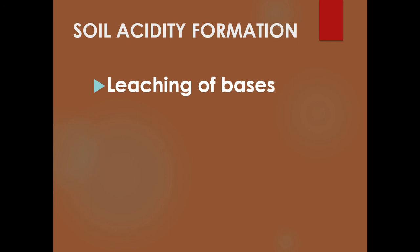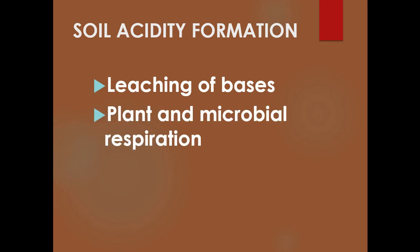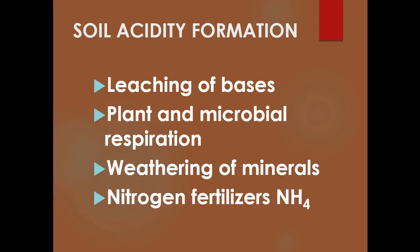How does acidity form in the soil? From the leaching of bases — if our soil has a low cation exchange capacity and higher rainfall, we can lose bases from soil formation. Plant and microbial respiration also play a role, as plants can take up bases or release hydrogen ions when taking in other elements. Weathering of certain minerals and nitrogen fertilizers can also increase soil acidity.